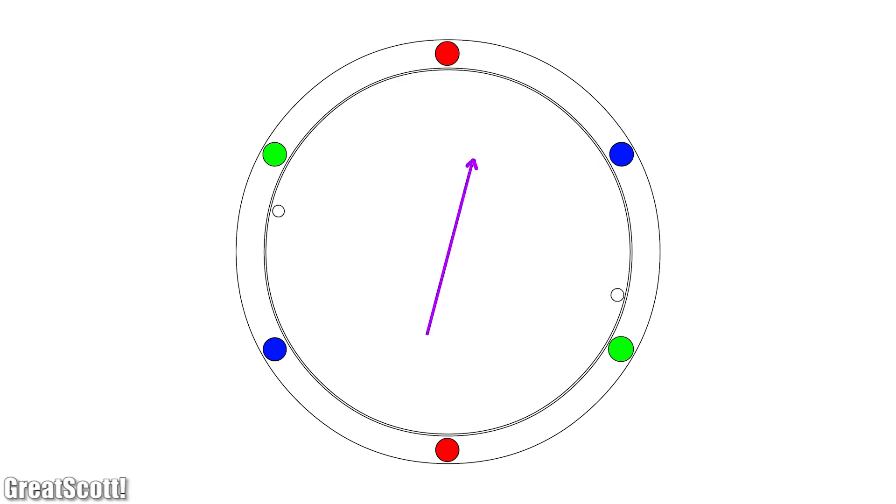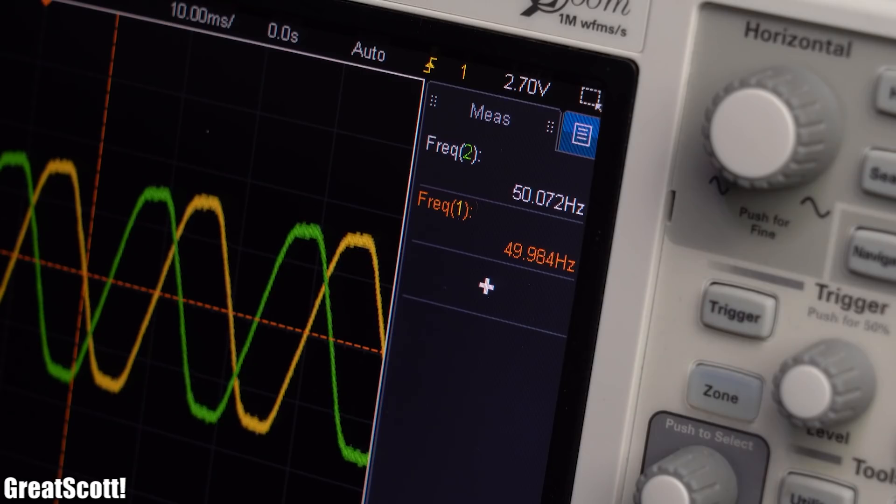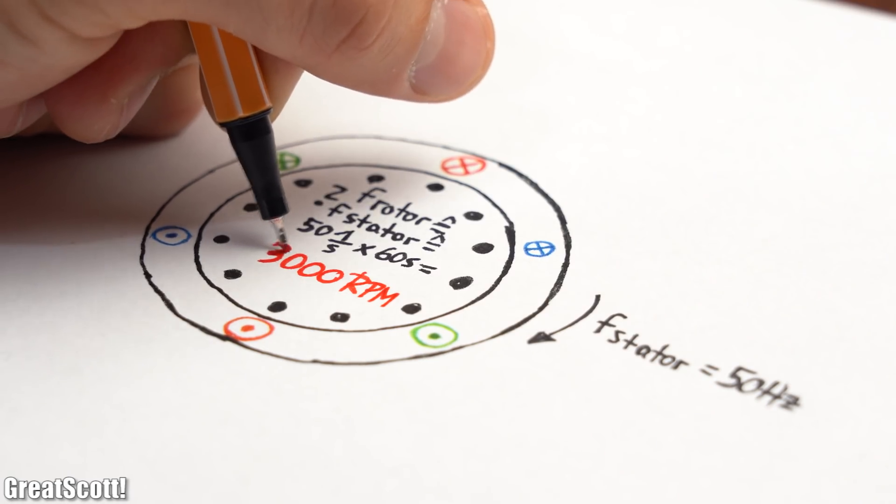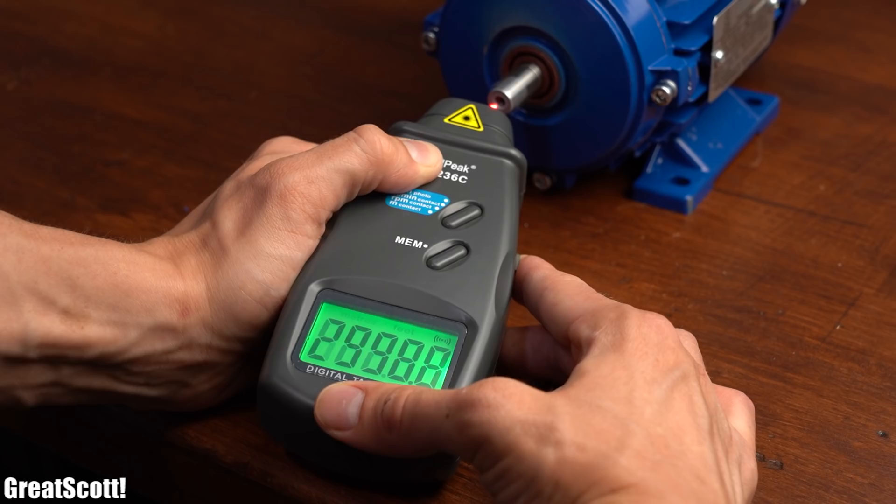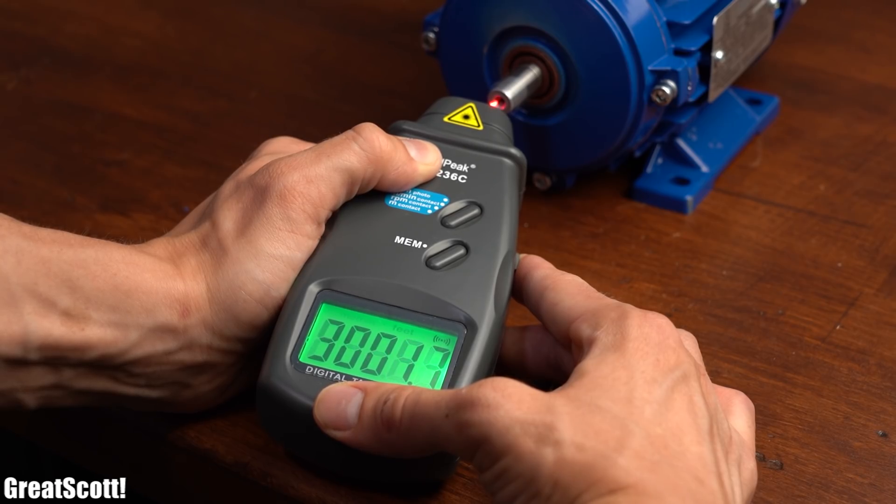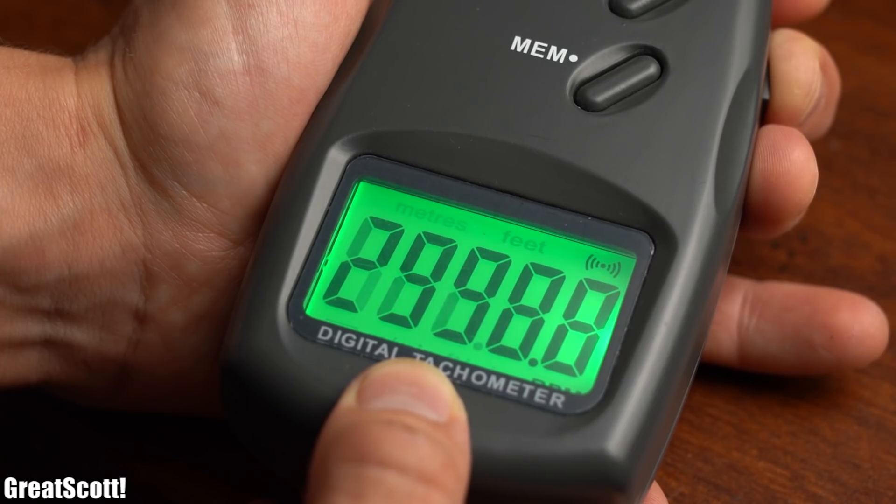And now that we know the functional basics we should be able to assume that because we are working with 50hz voltage our rotor should follow the stator frequency with an rpm of 3000. So I used my tachometer in order to measure an rpm of just below 3000 rpm but why is it a bit lower?